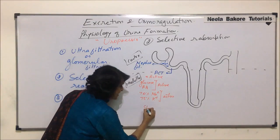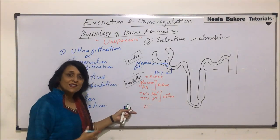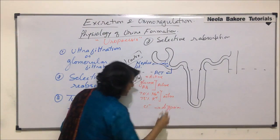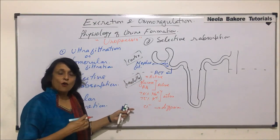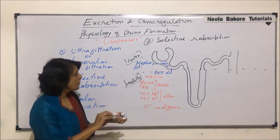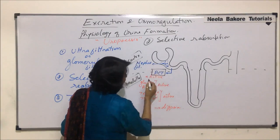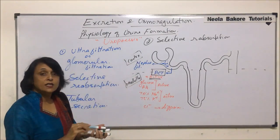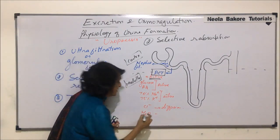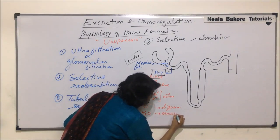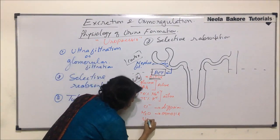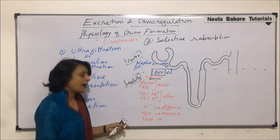Chlorine ions passively diffuse, so that is by diffusion. PCT — proximal convoluted tubule — helps mainly in active absorption. There is also absorption of a little water, and that is by simple osmosis — again passive. A small quantity of urea is also absorbed passively by diffusion.